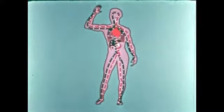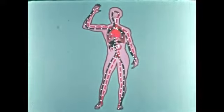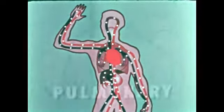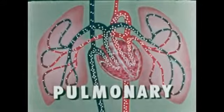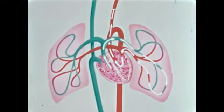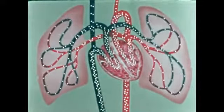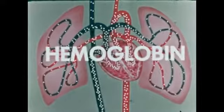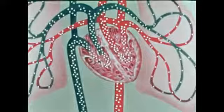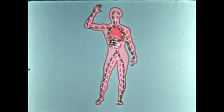The chemical composition of the blood changes as it travels through the circulatory system, which is divided into two main parts. The flow between the heart and the lungs is called the pulmonary circulation. Blood from the body enters the heart and is pumped to the lungs. Here, the blood gives off carbon dioxide collected in the body tissues. A substance in the red cells called hemoglobin combines with oxygen, changing the color of the blood from blue-red to bright red.